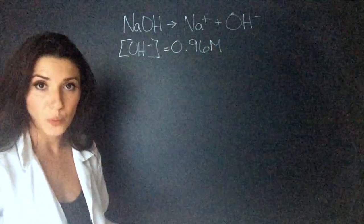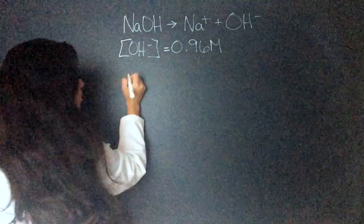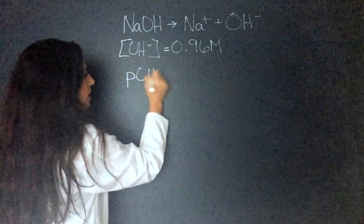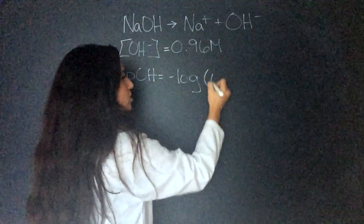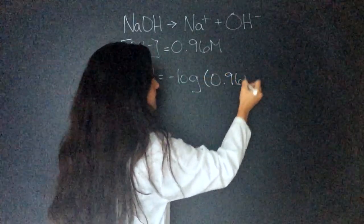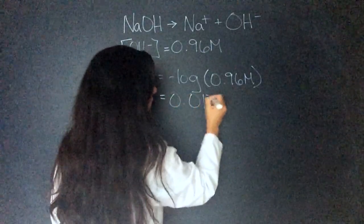Now we can find the POH. Remember, we can't find pH when we have concentration of OH. So the POH is equal to the negative log base 10 times the concentration of OH, which is 0.96. That equals 0.0177.